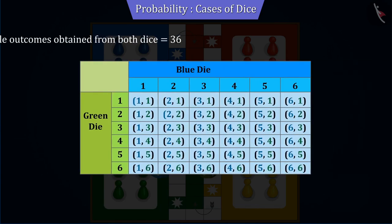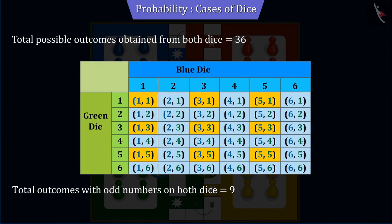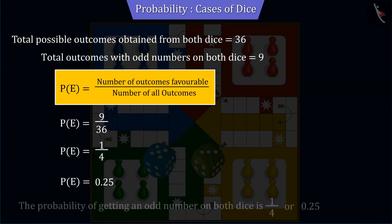Similarly, if we find the probability of getting an odd number on both dice, then it also gives us 9 by 36, or 0.25.